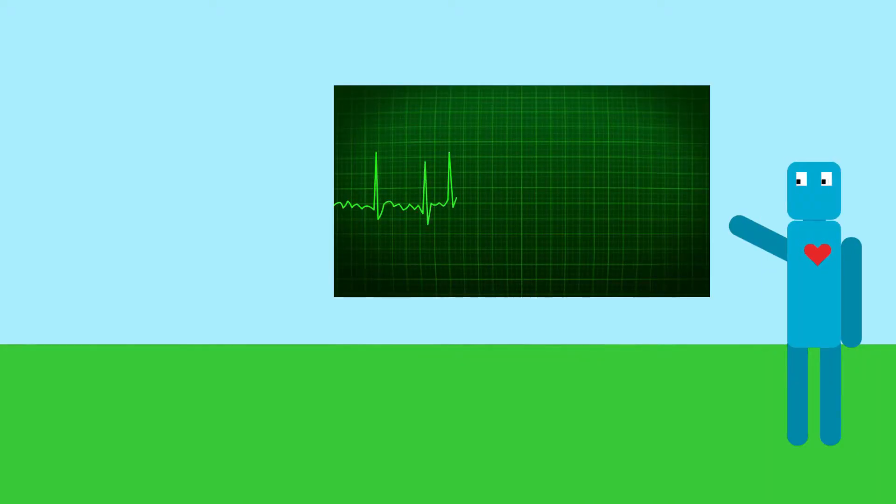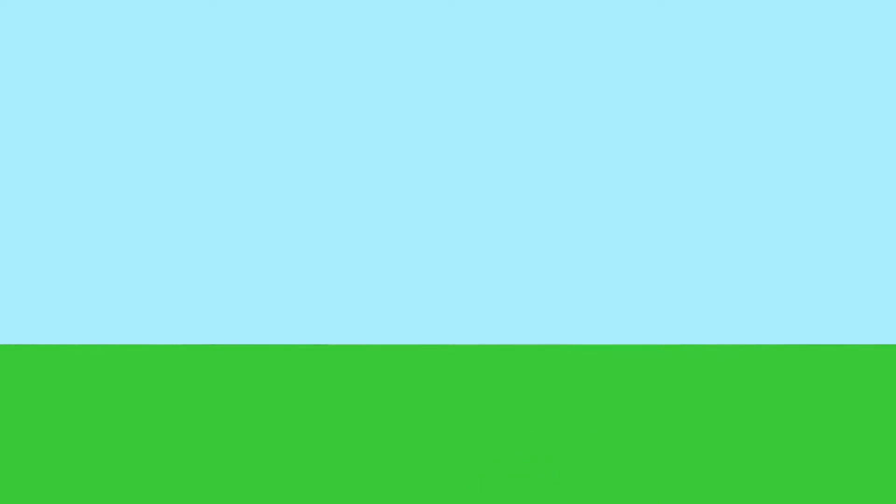This isn't the only reason why people faint. People can also faint because of heart conditions that cause an irregular heartbeat. They can even faint if they stand up too quickly, because the heart struggles to pump blood to the brain.